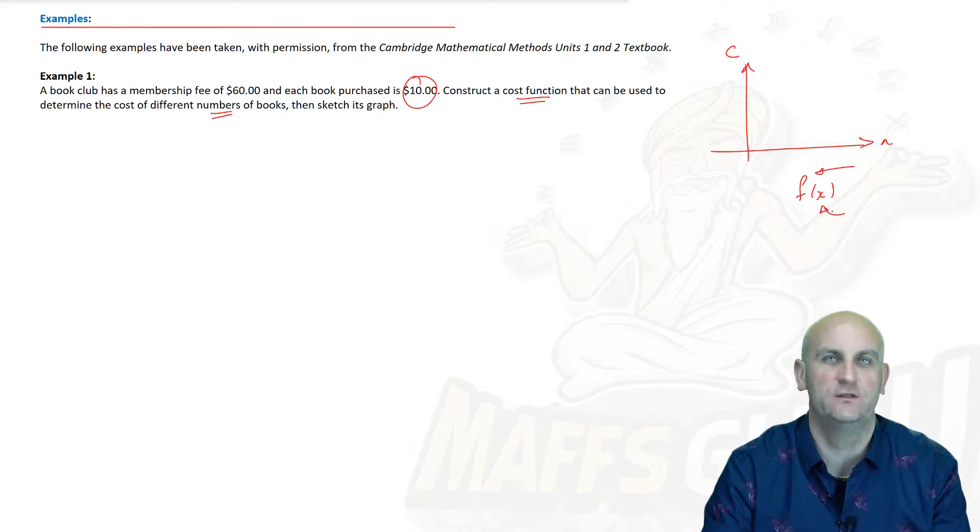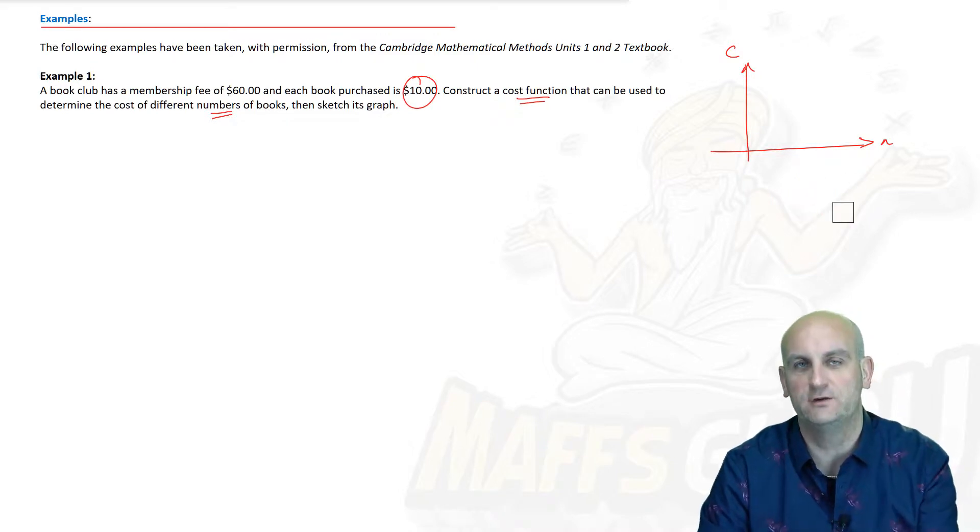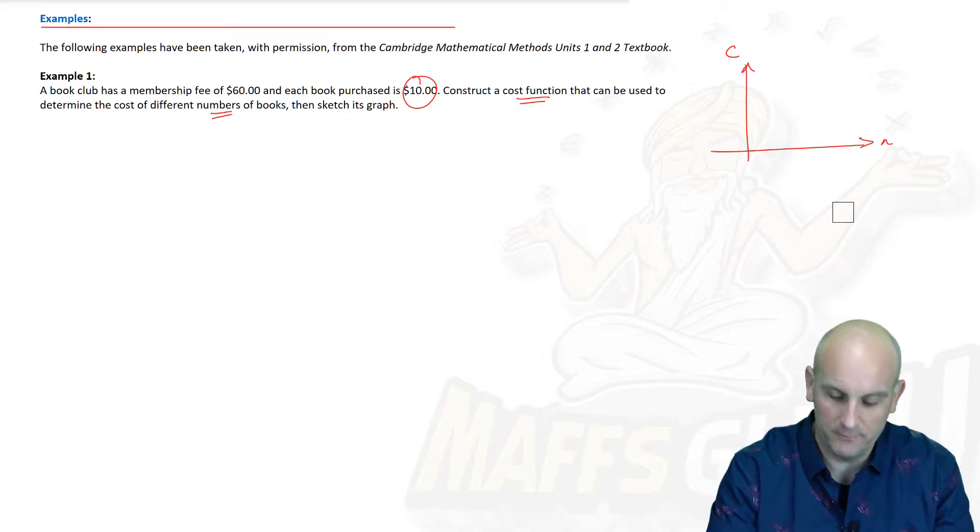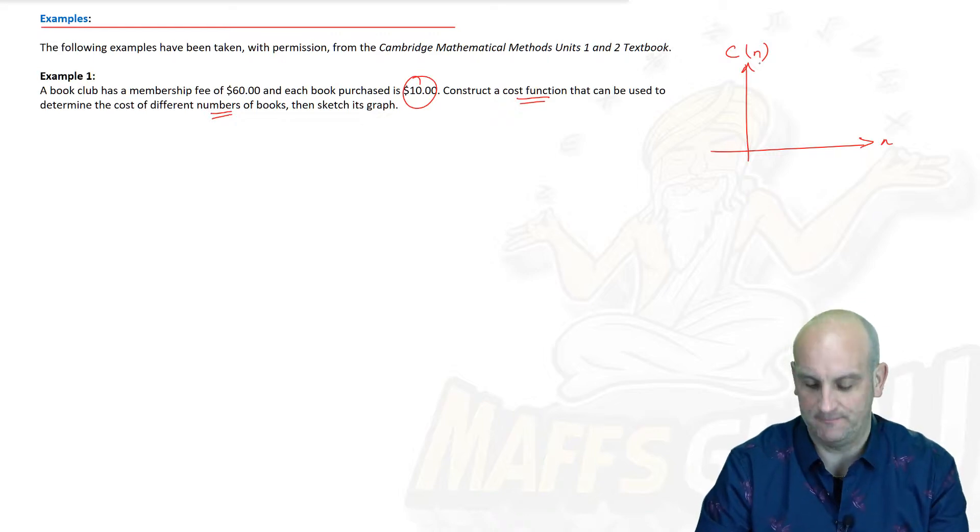We've got the number of books and what other variable are they dealing with? It appears to be cost. But I'm going to slightly amend that because we need a cost function. If you remember from particular graphs previously, we had things like f of x and that was a function. I'm going to write that as C and in brackets N.